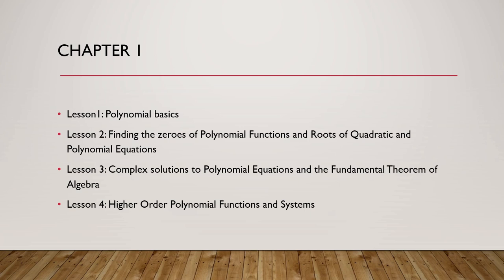An, an minus 1 up to a0 are constant real or complex numbers. They are also called the coefficients of the polynomial.